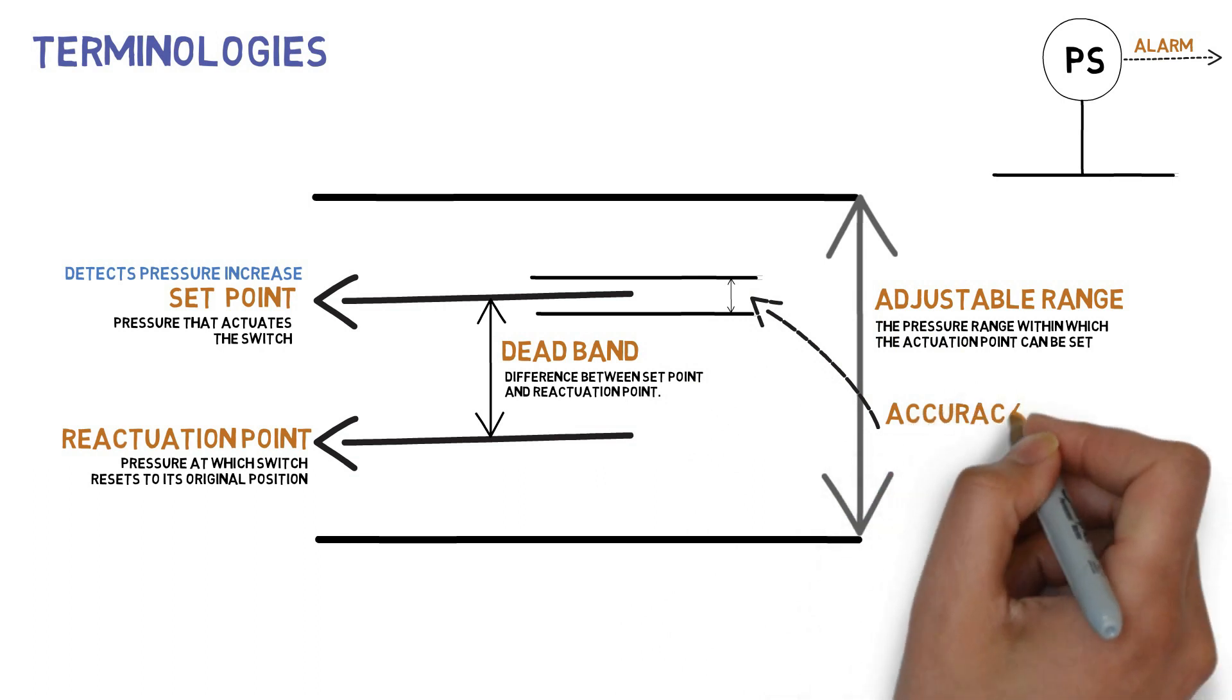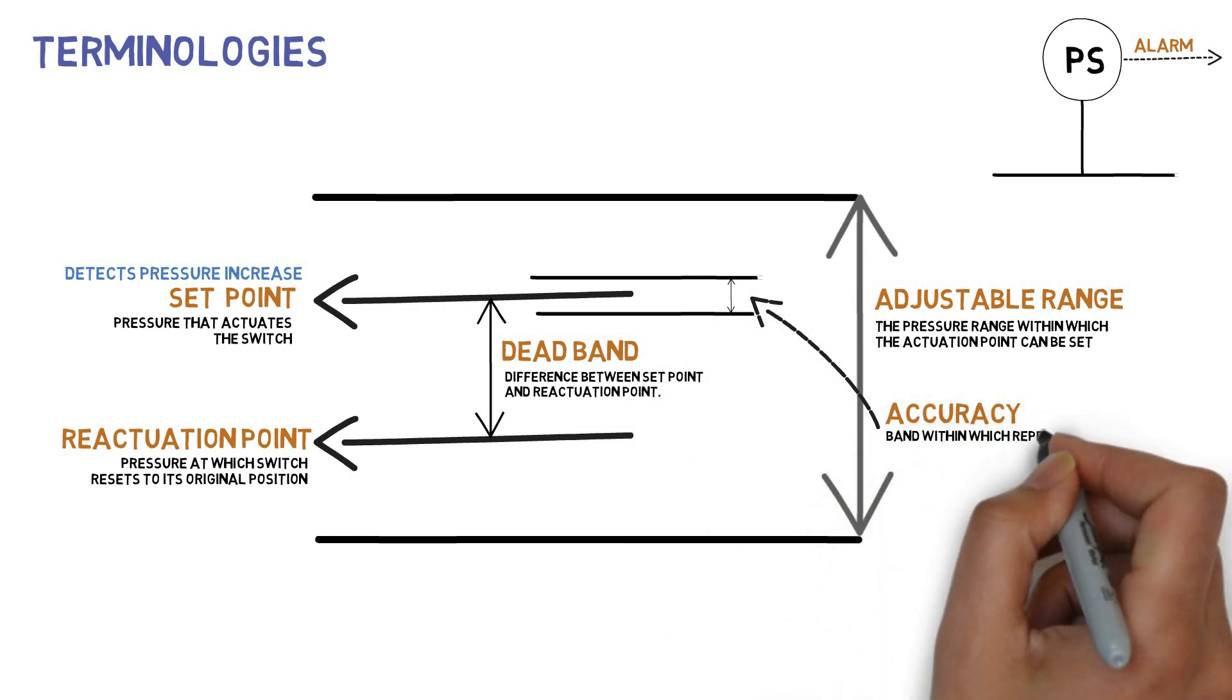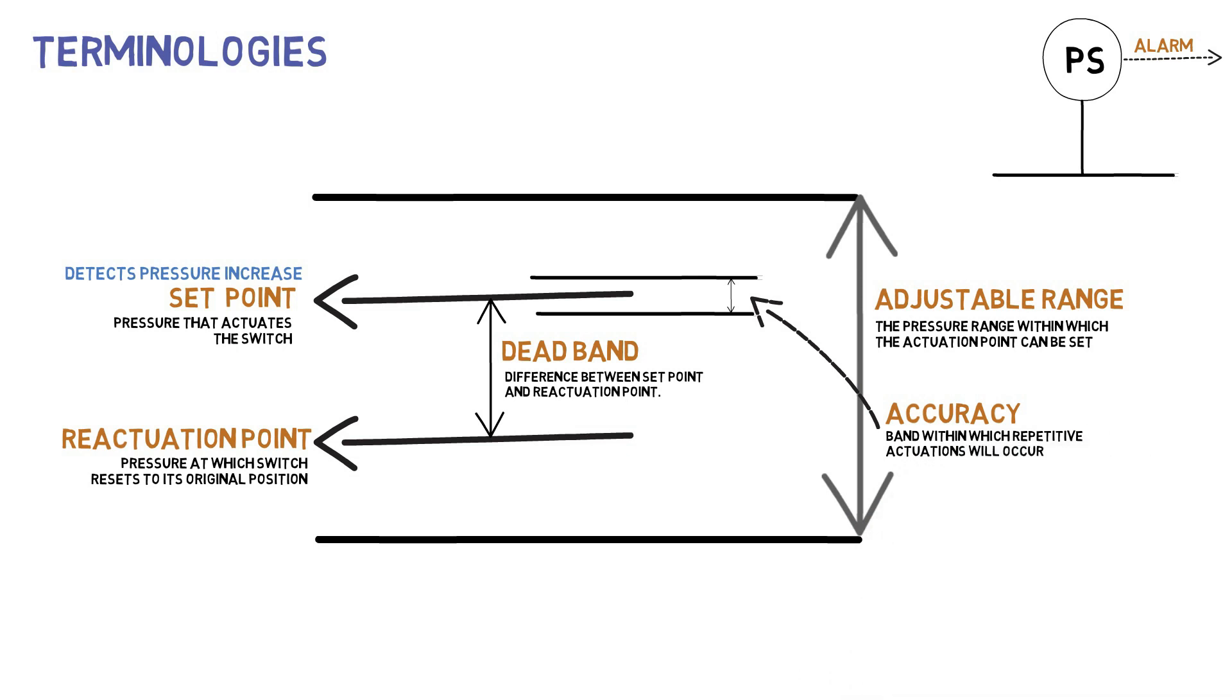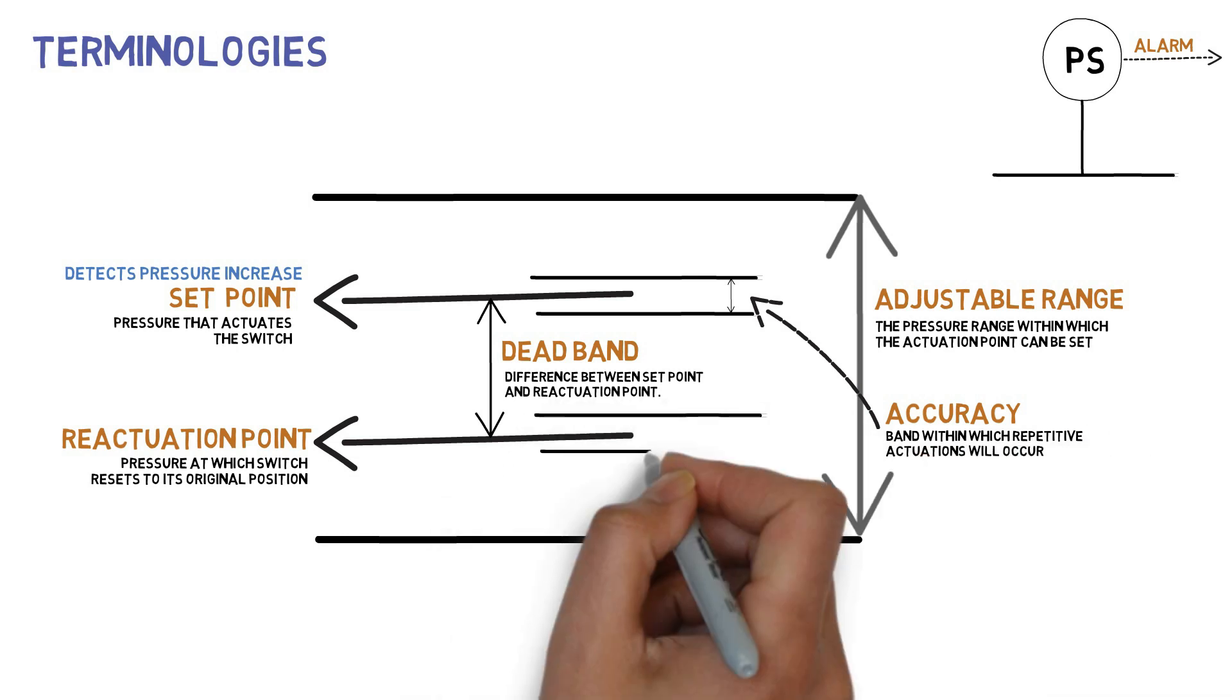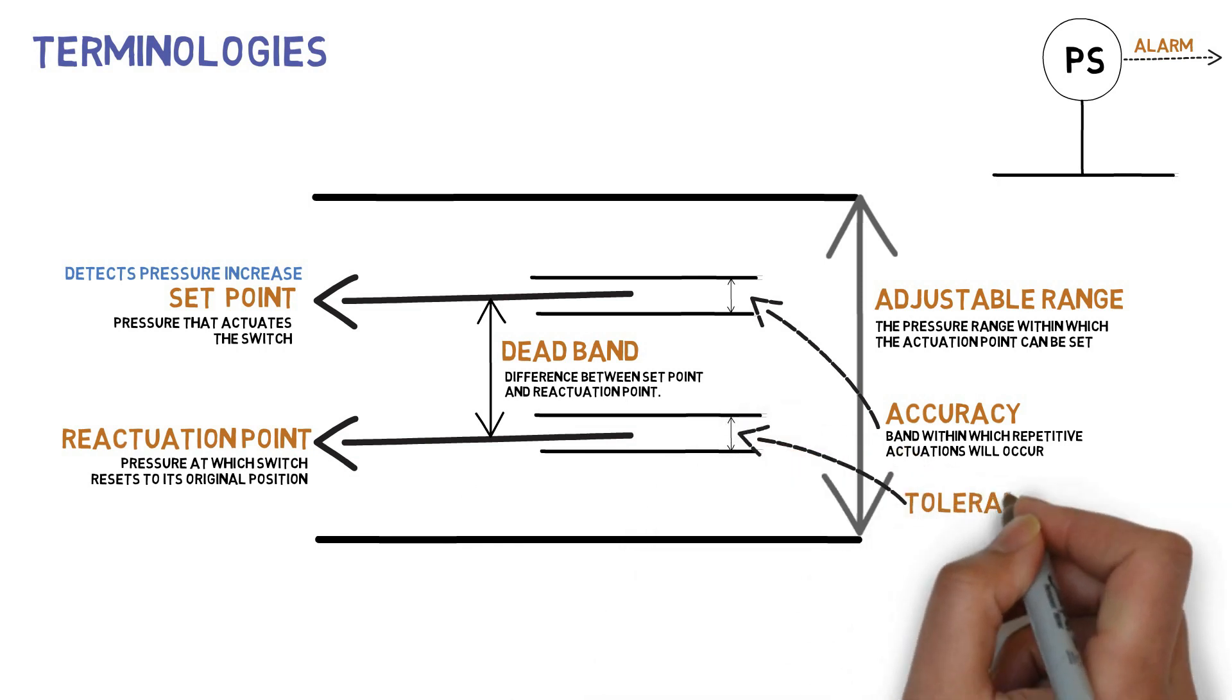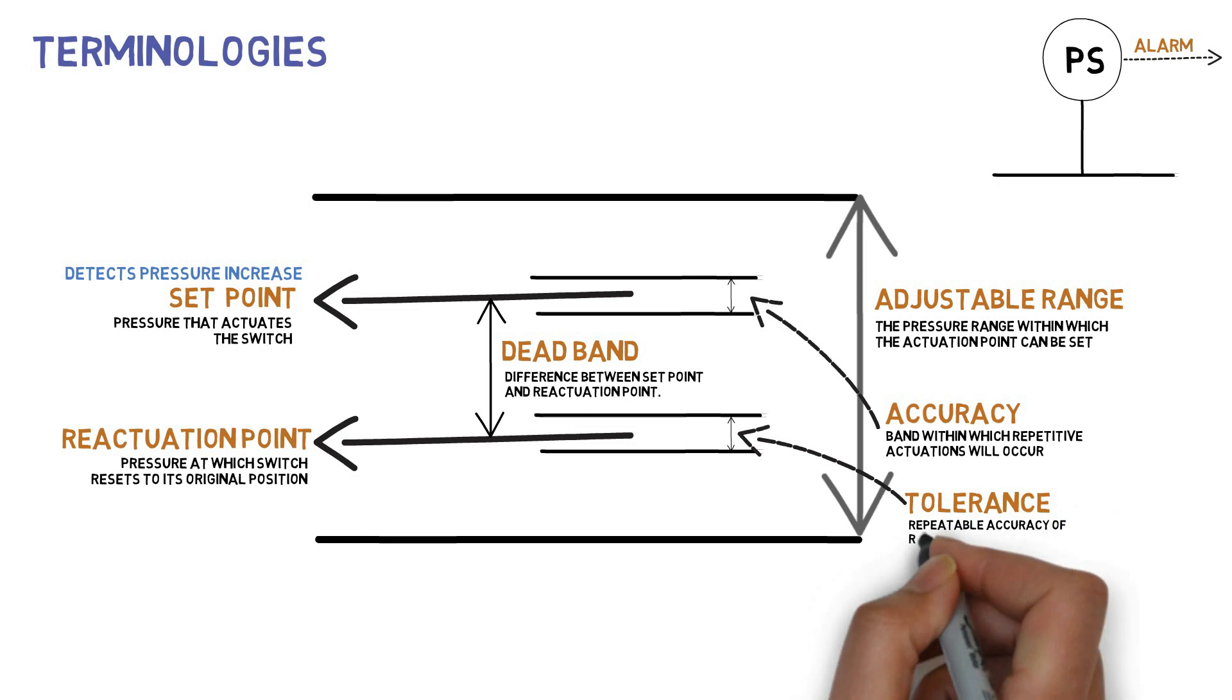The set point accuracy defines the band within which repetitive actuations will occur. Tolerance is the repeatable accuracy of the reactuation point.